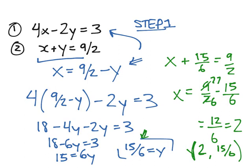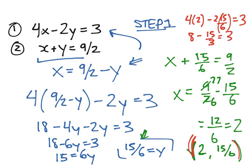And, to convince you further that this is right, we can plug this back into our first equation. So, that would be 4 times 2 minus 2 times 15 over 6 is equal to 3. So, that's 8 minus 15 over 3 is equal to 3. 8 minus 5 is equal to 3. And, that is correct. Our pair works.